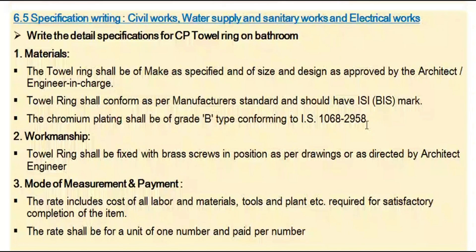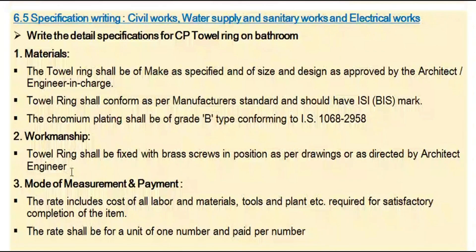Grade B type — this is the IS code for the material. B type material properties are confirmed. The site engineer or architect must approve the B type material. The material must match according to the document and the maker; it keeps the material fixed properly.